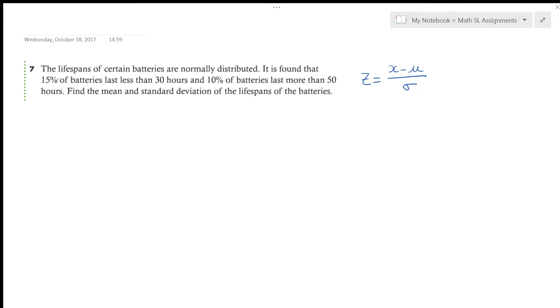Okay, so let's look at what we have. I've got the lifespan of certain batteries and they're normally distributed. It's found that 15% of batteries last less than 30 hours. So the probability that my battery, let's call my battery X, the lifespan of the batteries is X. Probability that X is less than 30 is 15%. The probability that the batteries last more than 50 hours, so greater than 50, is 10%.